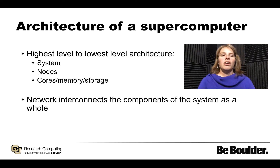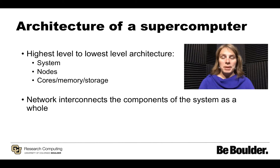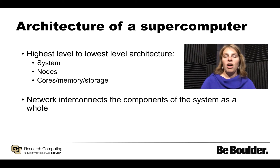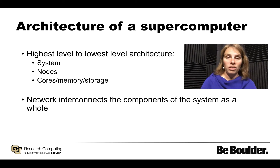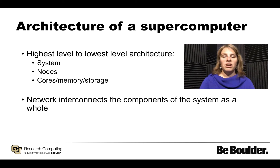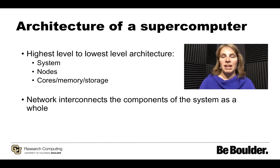The architecture of a supercomputer falls from highest level to lowest level — the highest level being the system as a whole, then nodes, and all the way down to the cores, memory, and storage. A network interconnect connects the components of the system as a whole and allows it to operate together.